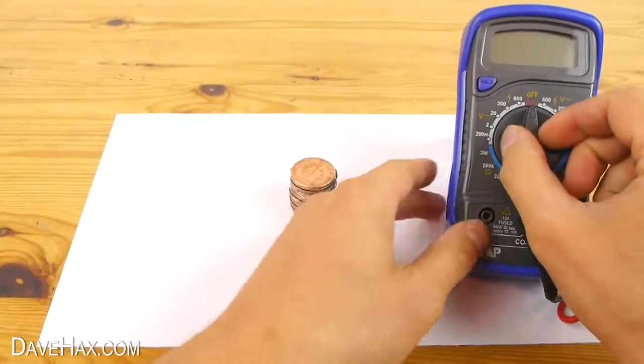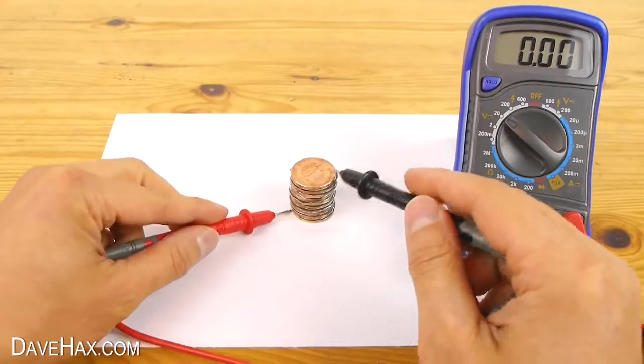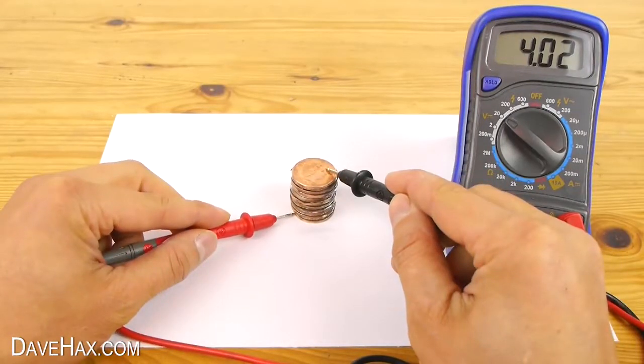I'm going to use a multimeter to see what sort of voltage it generates. As you can see this stack of 10 coins pushes out an impressive 4 volts.